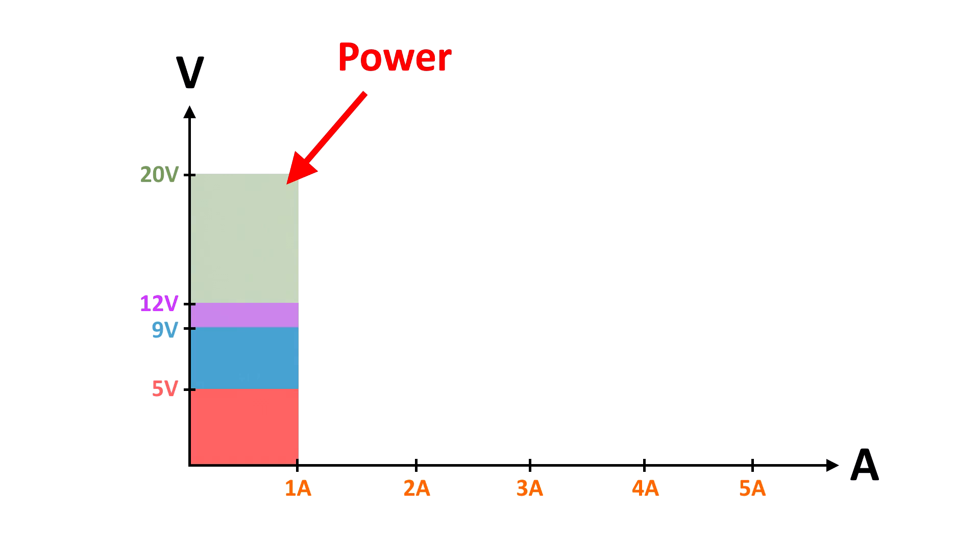But how exactly does it do that? So here we have a nice graph with current on the x-axis, 1 amp, 2 amps, 3 amps, 4 amps, 5 amps, and volts on the y-axis. And of course, as we know, power equals voltage times current. So in order to get more power to your phone to charge it, you need to either increase the voltage or increase the current.